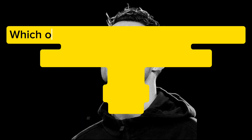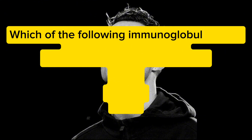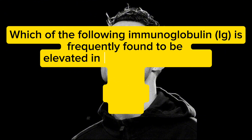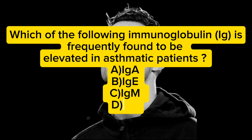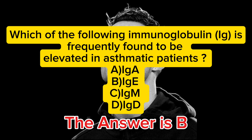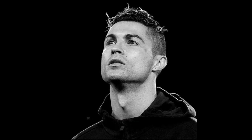Which of the following immunoglobulins is frequently found to be elevated in asthmatic patients? The answer is B — IgE.